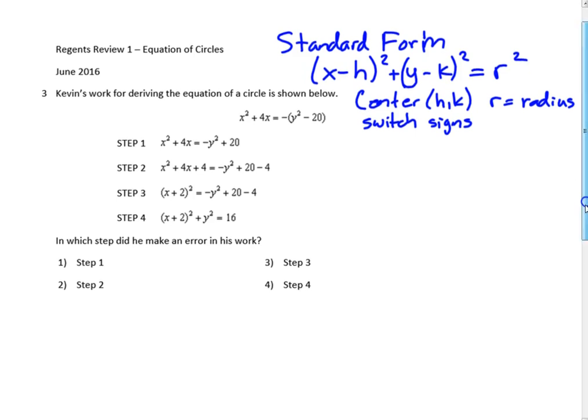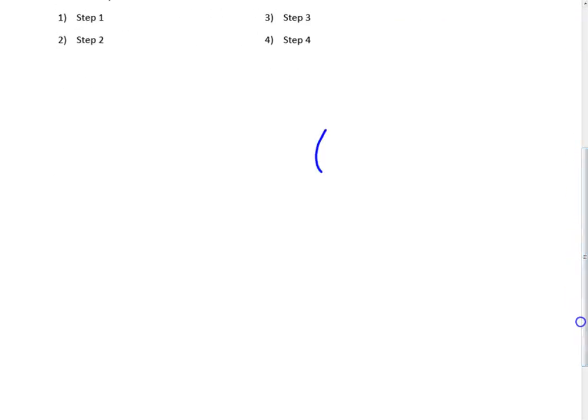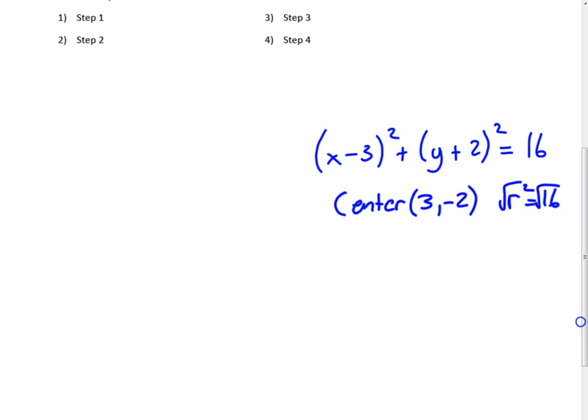For example, if we had (x - 3)² + (y + 2)² = 16 and the question was what is the center, well all we're going to do is switch the sign. So that minus 3 is positive 3, the plus 2 is negative 2. And remember over here it equals r². So if r² is 16 and we take the square root, the square root of 16 is 4. That's the simplest version: given the equation, identify the center and the radius.